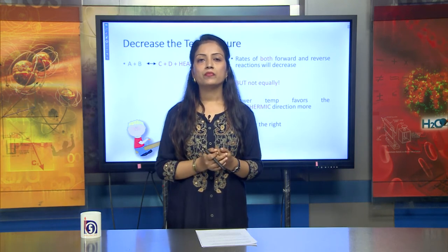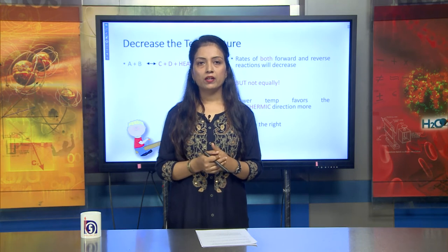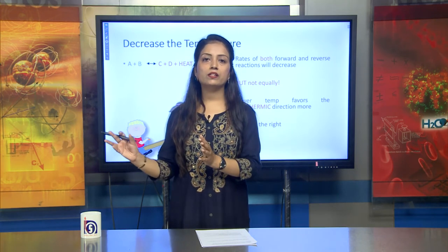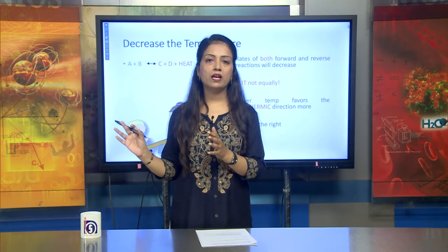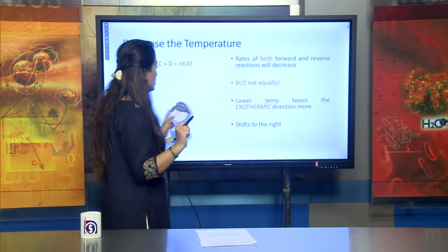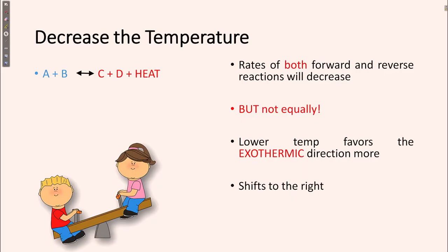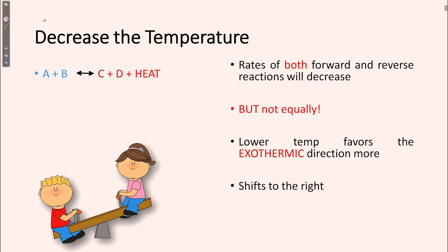Endothermic reaction means we give some energy for the reaction to occur. Whenever energy is evolved during the reaction, this kind of reaction is known as exothermic. So decrease in temperature favors the exothermic direction more — that means the reaction will shift to the right direction, which is the forward direction, and the product will increase as compared to the reactant.